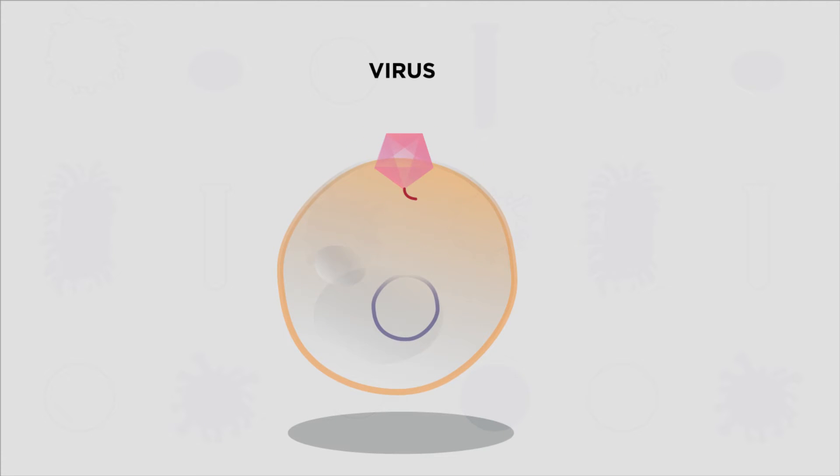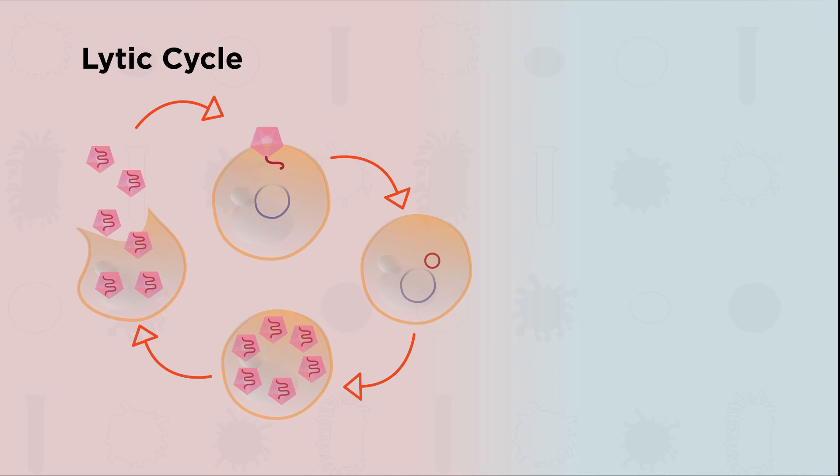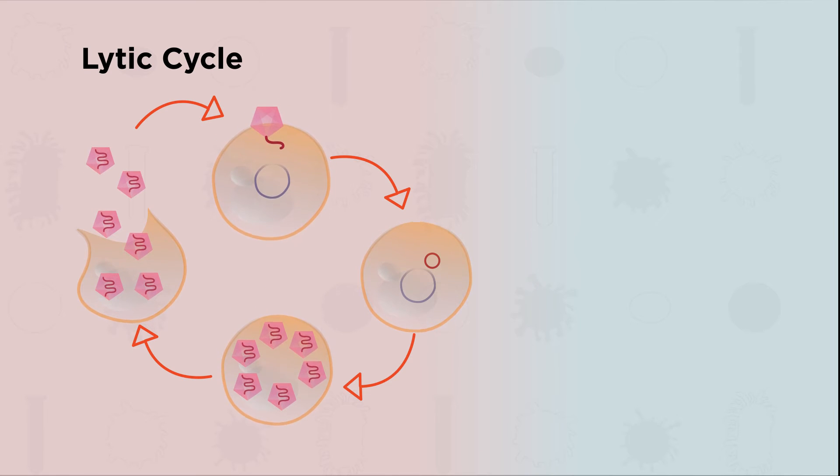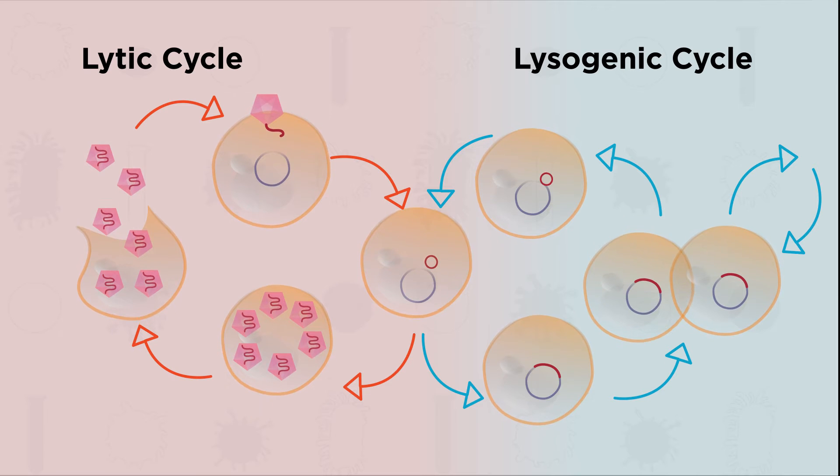All viruses need to hijack a host cell to reproduce. The virus life cycle can go down one of two routes: the fast option known as the lytic cycle, or the slower option known as the lysogenic cycle.